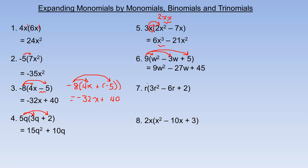For number 7, the r is distributed into the brackets. r times 3r squared gives 3r cubed — r times r squared is r cubed. r times negative 6r gives minus 6r squared — there's an r here and another r there, giving r squared. And r times 2 is plus 2r.